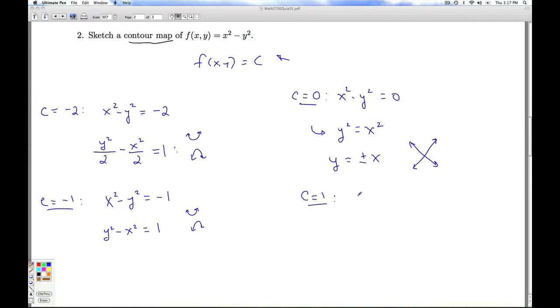If I look at c equals 1, I get x squared minus y squared equals 1. And that's going to give me a hyperbola that's going to open to the left and to the right.